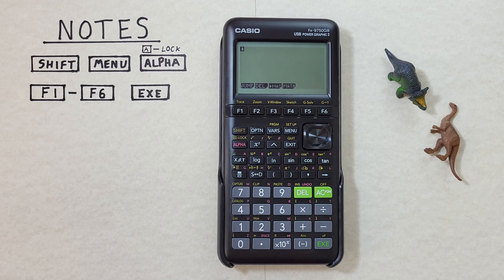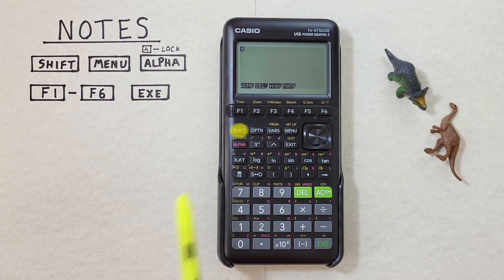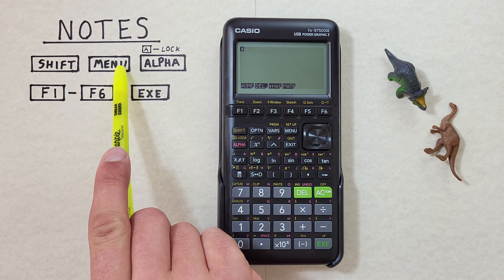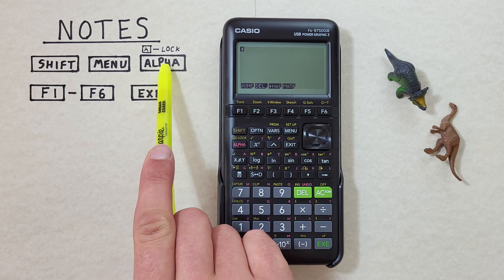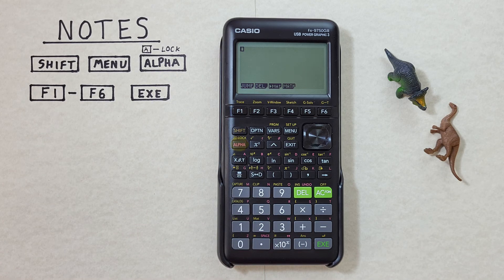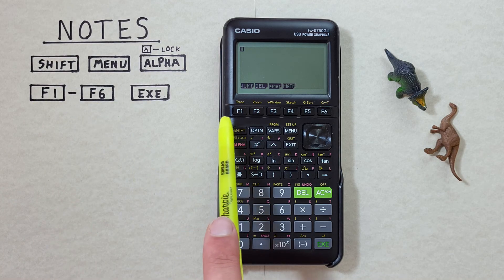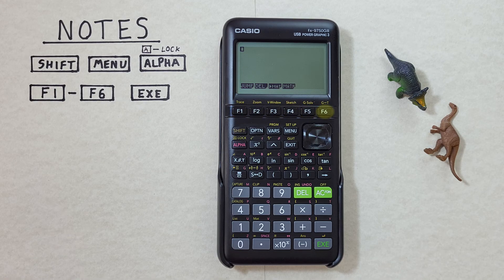To do this we'll use the shift key that looks like this located here, the menu key that looks like this located here, the alpha key that looks like this located here, the F1 through F6 keys that look like this located across the top here, and the EXE key that looks like this located down here.